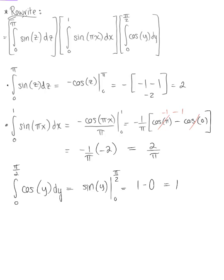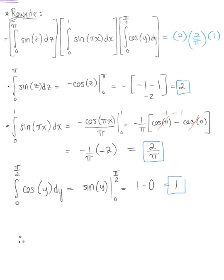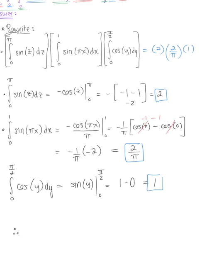So we have our three individual pieces: the z integral gives two, the x integral gives two over pi, and the y integral gives one. Multiplying them together: two times two over pi times one gives us a beautiful final answer of four over pi.